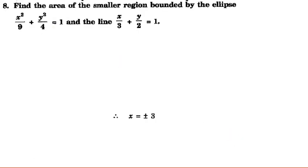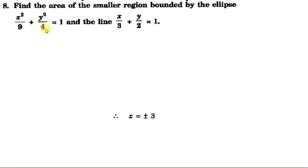The next question is: find the area of the smaller region bounded by the ellipse x²/9 + y²/4 = 1 and the line x/3 + y/2 = 1. For this ellipse, comparing with the general form x²/a² + y²/b² = 1, we have a² = 9 so a = 3, and b² = 4 so b = 2. That means semi-major axis is 3 along the x-axis, and semi-minor axis is 2.